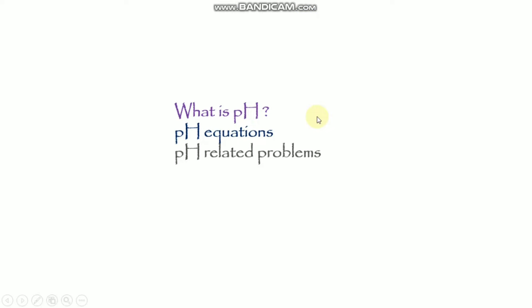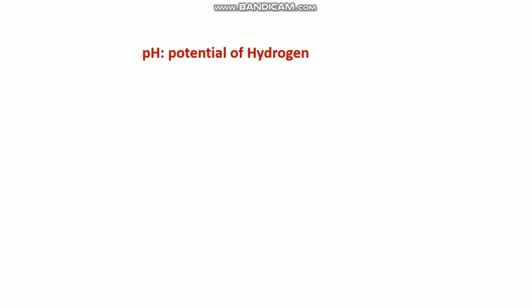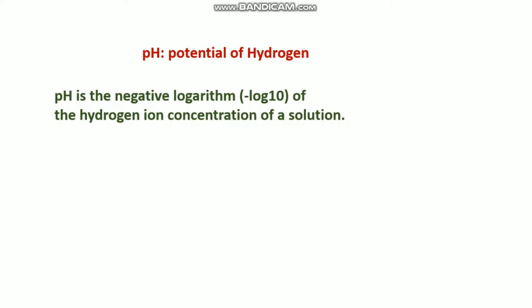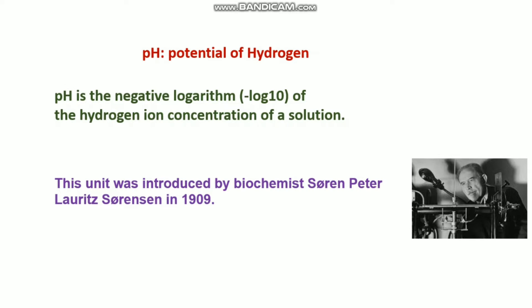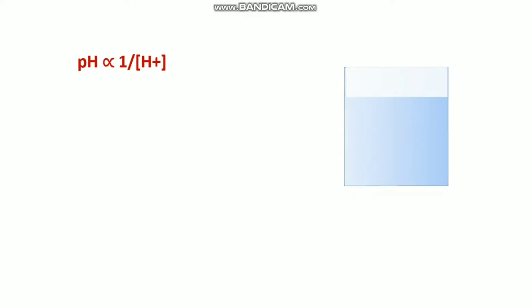Hello everyone, welcome back to my channel. In this tutorial video I'm going to talk about what is pH, pH equations, and pH related problems. pH is the short form for 'potential of hydrogen.' pH is determined by the number of hydrogen ions present in a solution. This unit was introduced by biochemist Søren Peter Lauritz Sørensen in 1909.